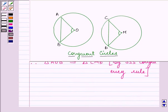So we can say that angle AOB equals angle CMD by CPCT, that is congruent parts of congruent triangles are equal to each other.